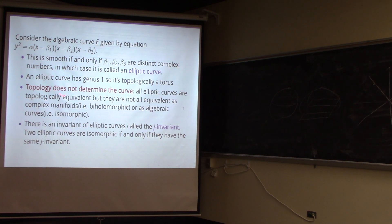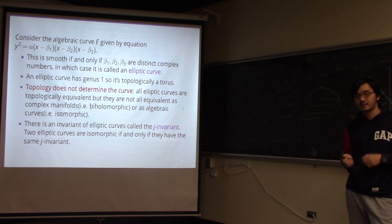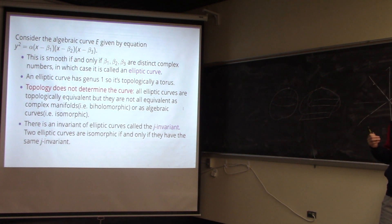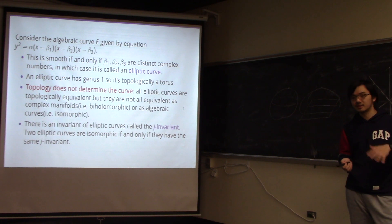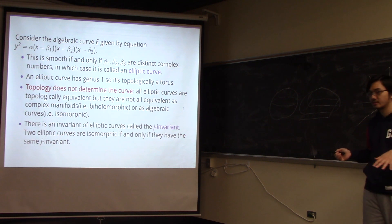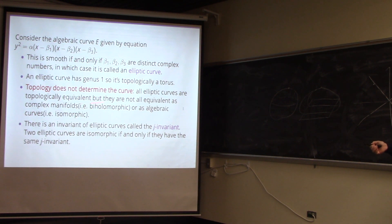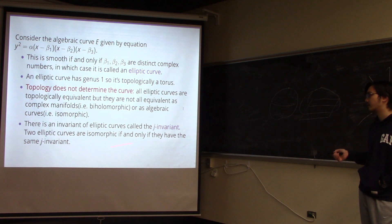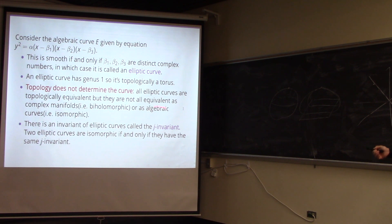One interesting thing about these curves is that the topology does not determine the curve. All elliptic curves look like a torus topologically, but they are not the same as complex manifolds. Two elliptic curves are isomorphic as algebraic curves only if the biholomorphic map between them is algebraic. Fortunately, elliptic curves are very well understood: there is an invariant called the j-invariant. Two elliptic curves are isomorphic if and only if they have the same j-invariant.